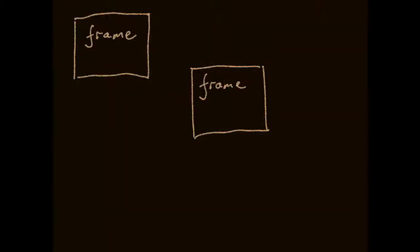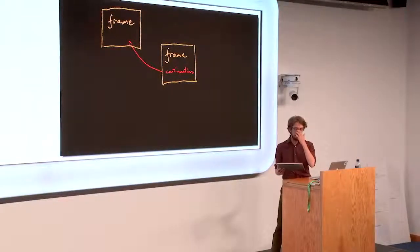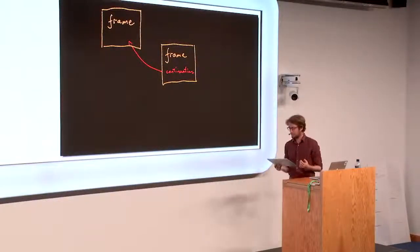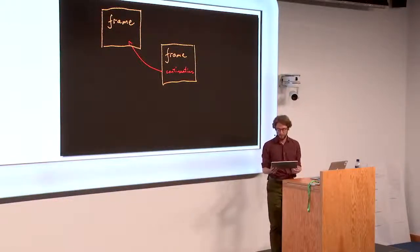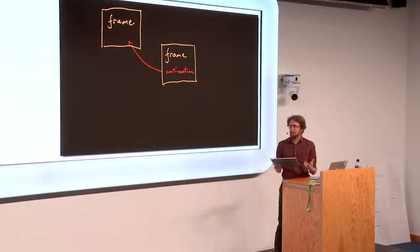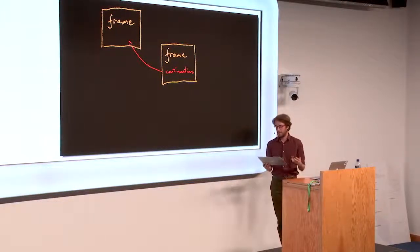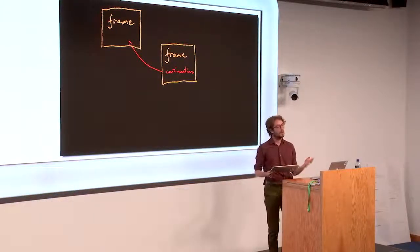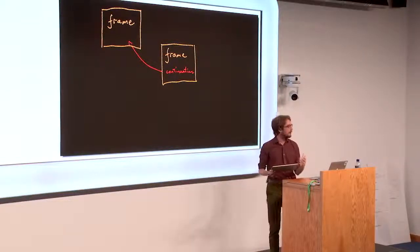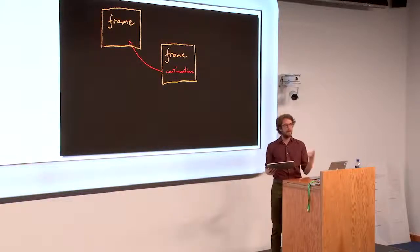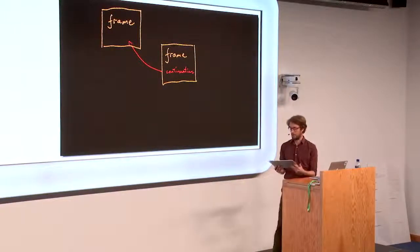So here we have, imagine this is a function calling another function which is generating a second call frame. And imagine that in this second call frame, we have this thing that we're going to call continuation, which is just a pointer to that previous call frame. And there's a certain low level understanding of the term where this is all it is. It's just a mechanism so that when we call return from that second function, we can use this continuation to return back to the call frame that we were executing before.